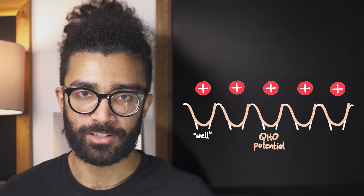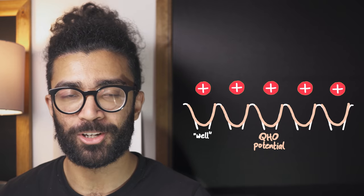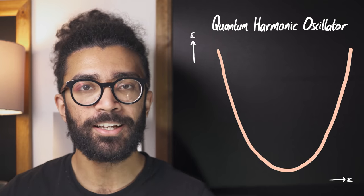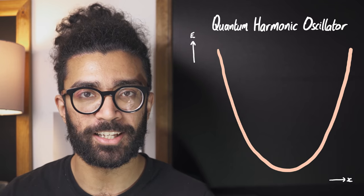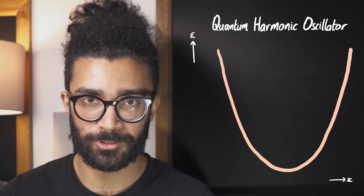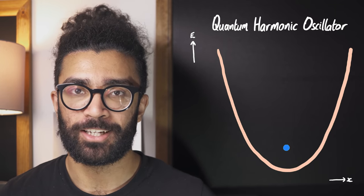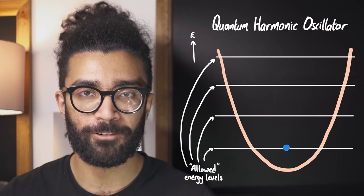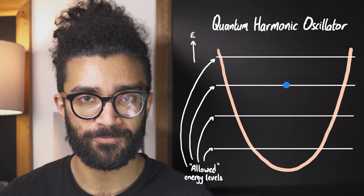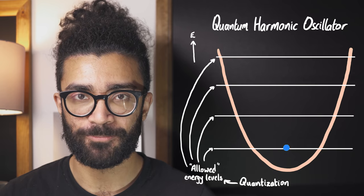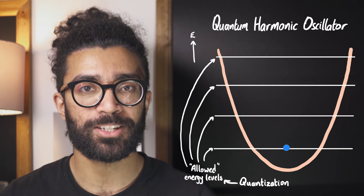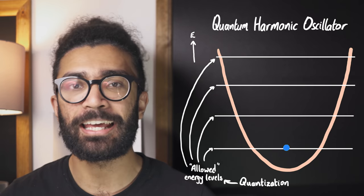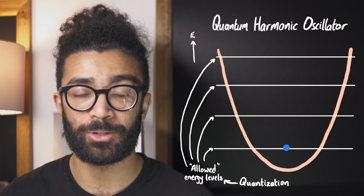This is similar to how we used the potential well earlier to find out something about the energy of our classical harmonic oscillator. Now the major difference between classical and quantum harmonic oscillators is that a quantum harmonic oscillator can only be found in particular energy levels. For example, an electron in this potential well can only be found with very specific energy values. This is known as quantization, and it does not apply in the classical case — in the classical case, our oscillator could have basically any energy value in this range.